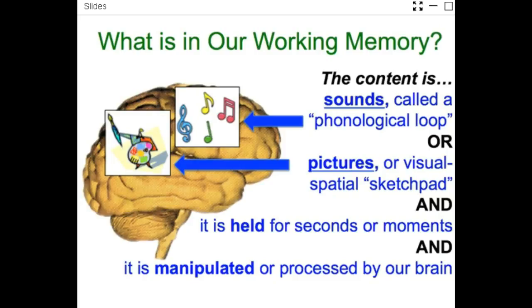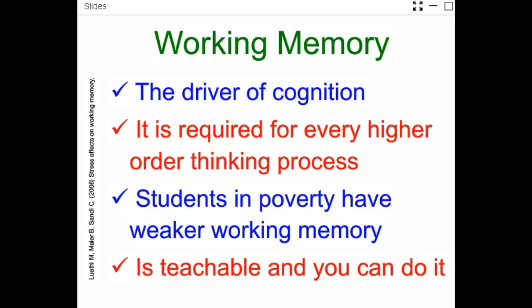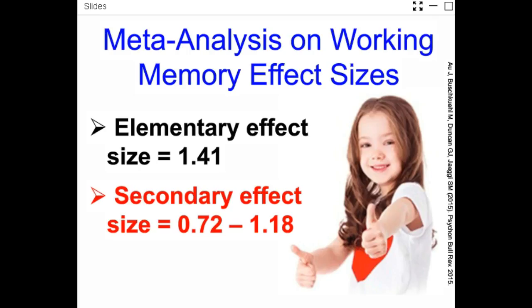In your brain, working memory only stores sounds and images — not smells, touch, or other sensations. So in the classroom, students that can store sounds and images do better in school. Working memory is a driver of cognition — it's required for every higher-order thinking process. Kids in poverty have weaker working memory, and this is a teachable skill. The effect size at the K-5 level is 1.41; at the secondary level it averages about 1.0, which is about two years' worth of gains. The effect size is huge.